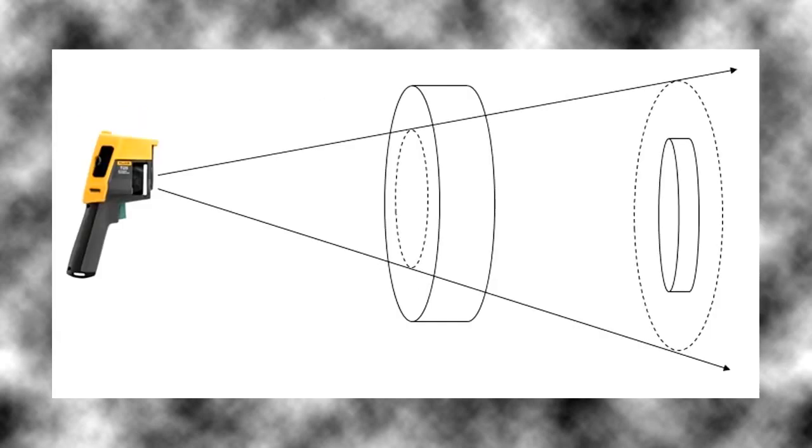In our graphic you see that the first target is bigger than the spot size which is the preferable situation. The measurement area is contained completely on the target.